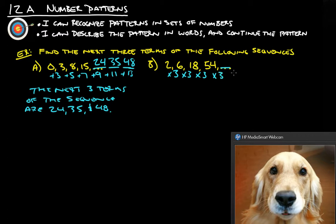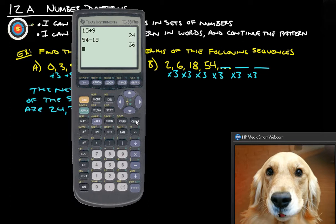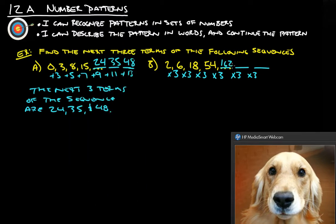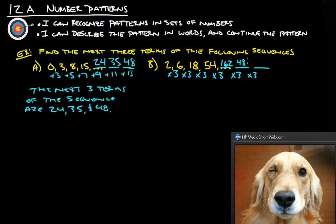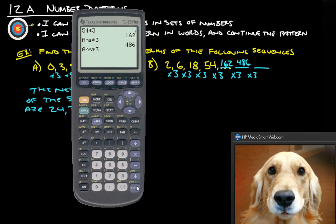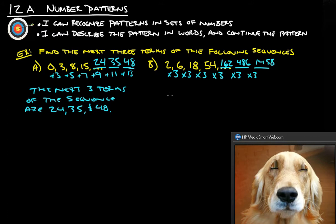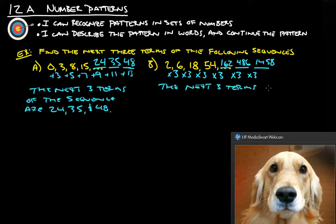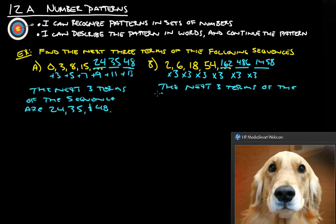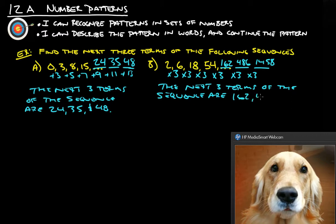So the next one is 54 times 3, and then we're going to take that and multiply it by 3 to get this one, and multiply that by 3 to get this one. So this one we're going to want to use our calculator for. So let's see, we've got 54 times 3, which gives us 162, and then we're going to take that answer and multiply that by 3 and get 486, and then we're going to multiply that by 3 to get 1458. So the next three terms of the sequence are 162, 486, and 1458.